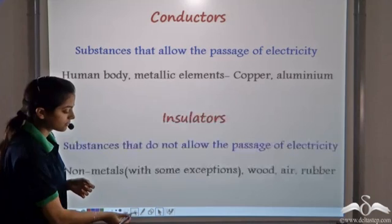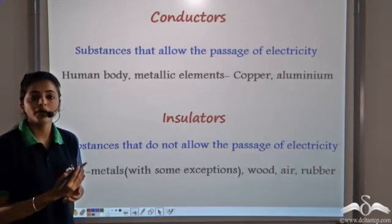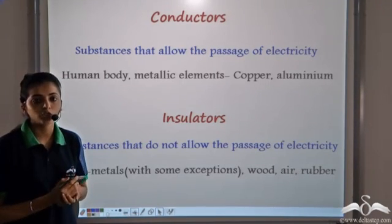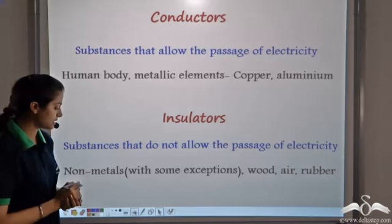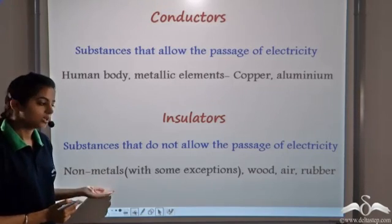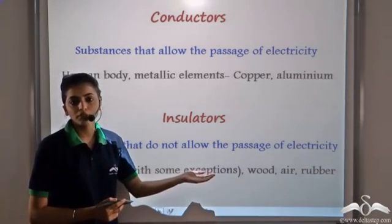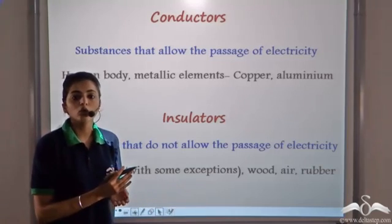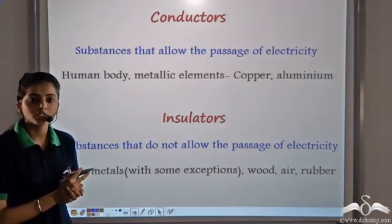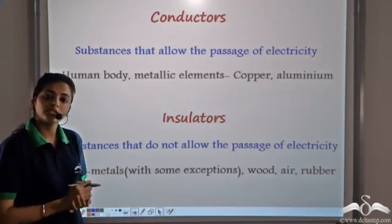And the substances that do not allow the passage of electricity through them are known as insulators. Examples: non-metals, air, wood, rubber. These substances do not allow the passage of electricity, and so these substances are known as insulators.